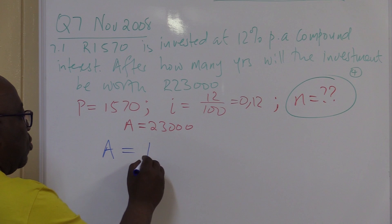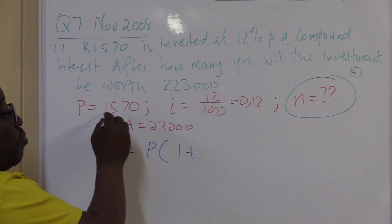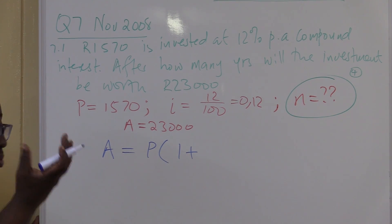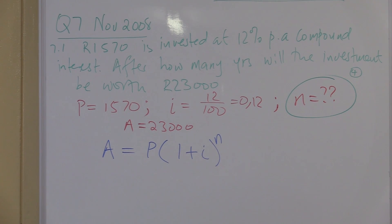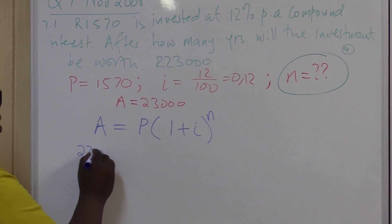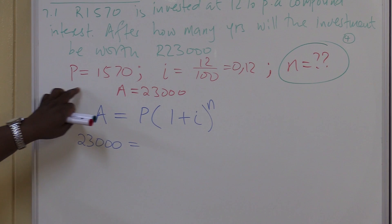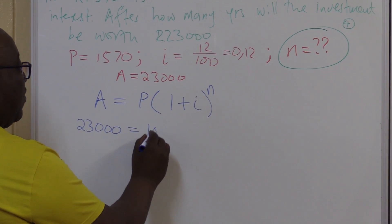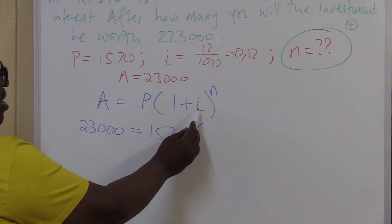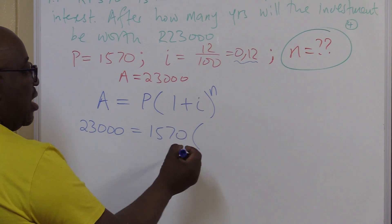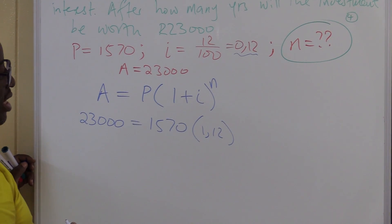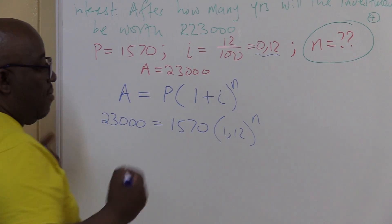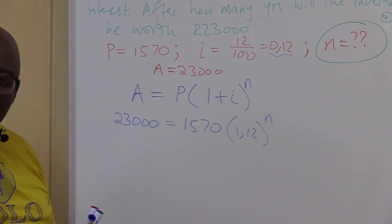Let's write it down correctly. It is A equals P into (1 plus i) raised to the power n. Because it grew from R1,570 to R23,000, it's plus. Now we substitute — it's simple Grade 9 substitution. A is 23,000. P is 1,570. My i is 0.12, so 1 plus 0.12 is 1.12. Raised to the power n — that's what I'm looking for. I now have only one unknown, so I can solve the problem. It becomes basic algebra.